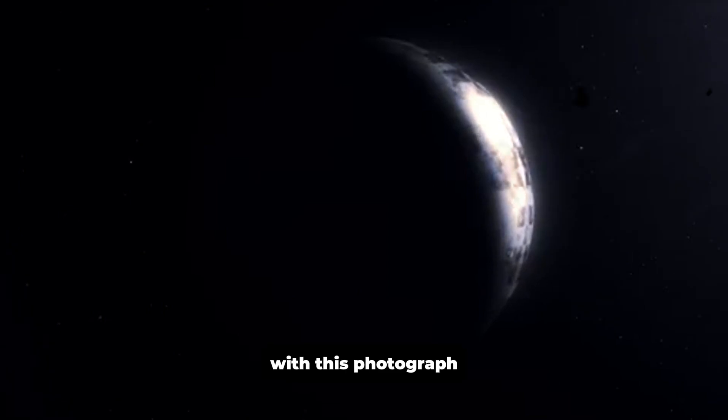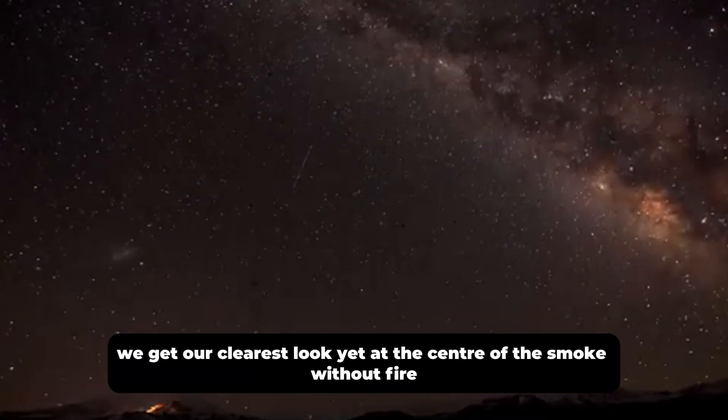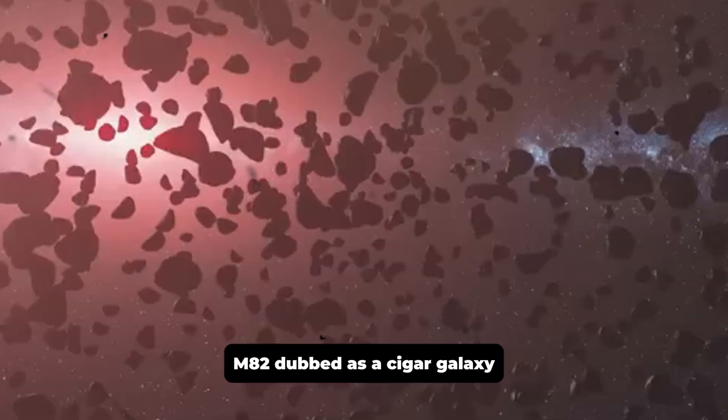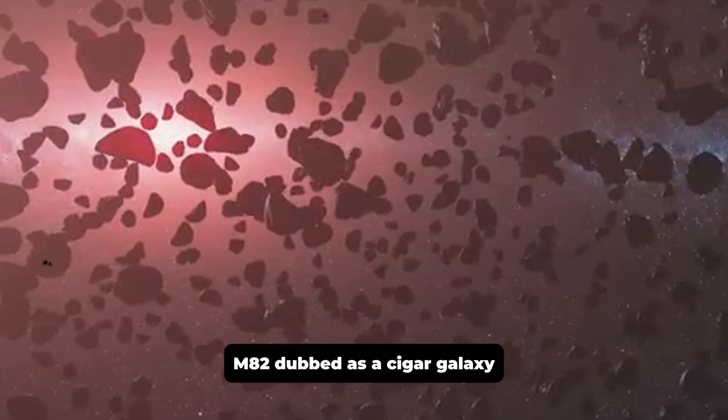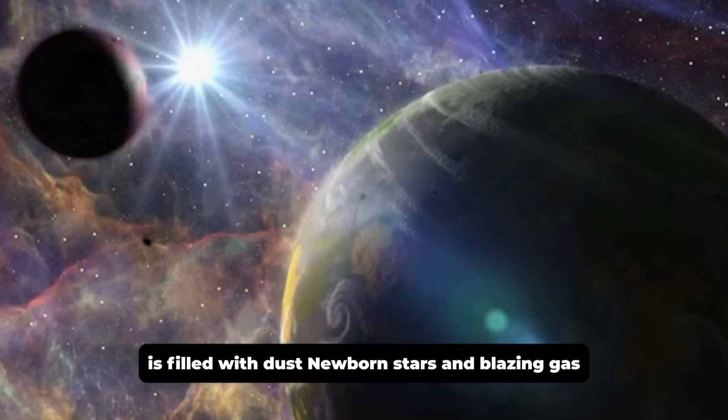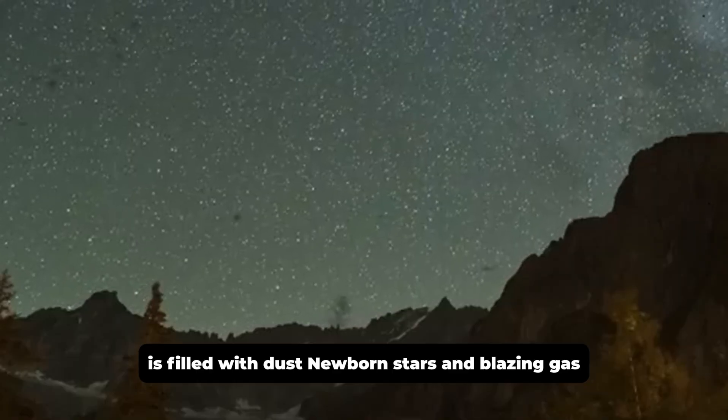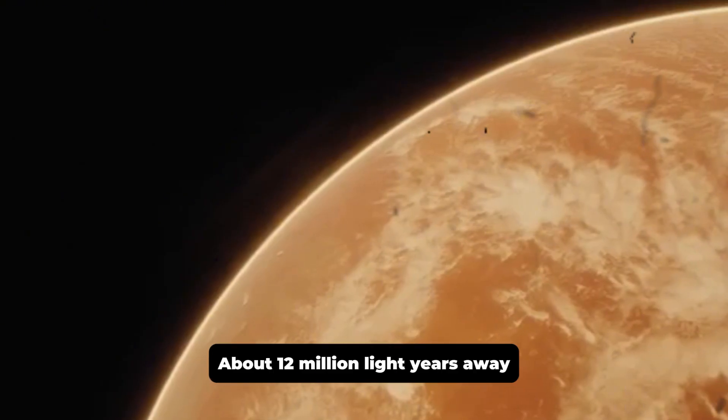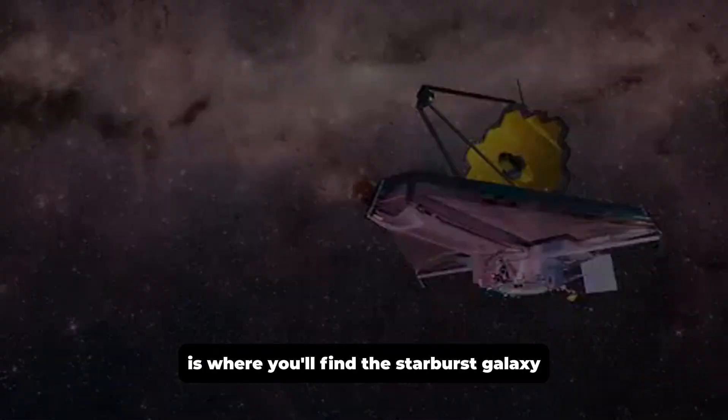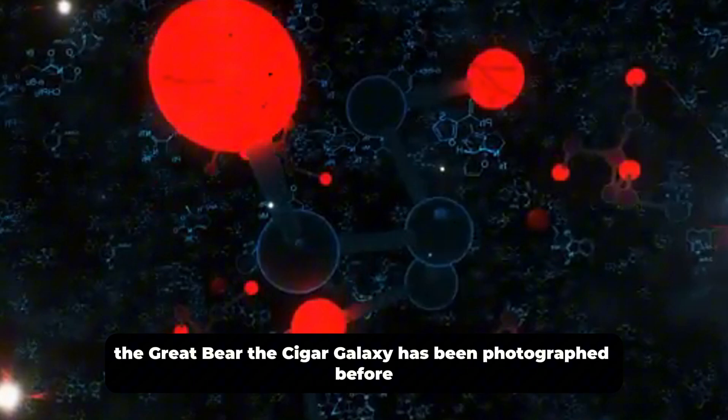With this photograph, we get our clearest look yet at the center of the smoke without fire. Messier 82 M82, dubbed as the Cigar Galaxy, is both extraordinarily bright and close to Earth, is filled with dust, newborn stars, and blazing gas. About 12 million light-years away in the constellation Ursa Major is where you'll find the Starburst Galaxy, the Great Bear.